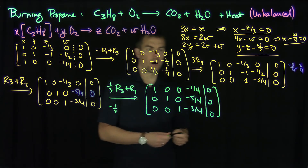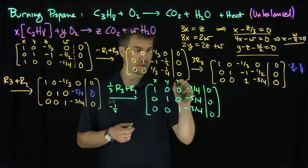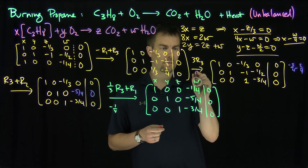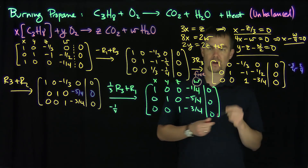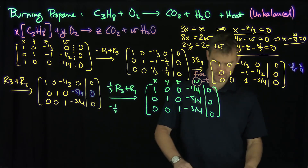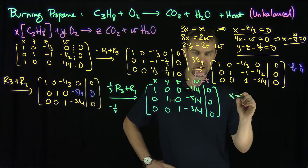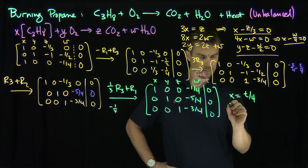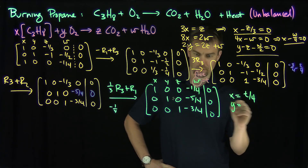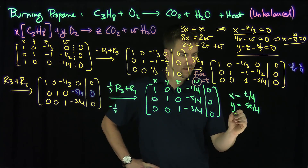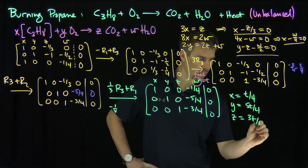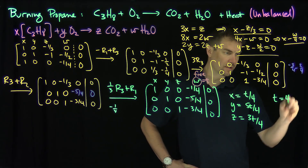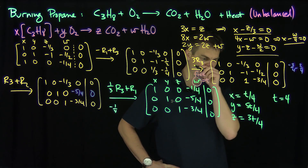So now W is the free variable — we'll call it t. From the matrix: X minus W over 4 equals 0, so X equals t over 4. Y equals 5t over 4. Z equals 3t over 4. Since we want X, Y, Z, and W to be integers, I choose t equals 4, which is the smallest value that cancels all the fractional factors.